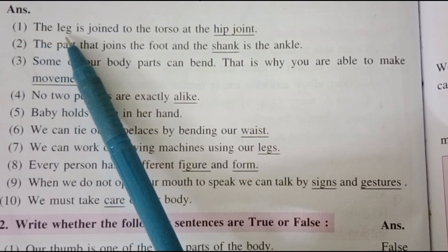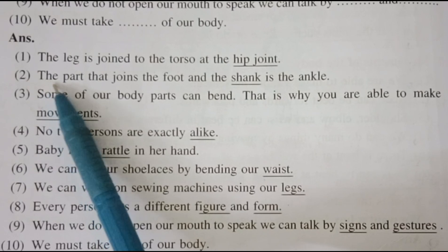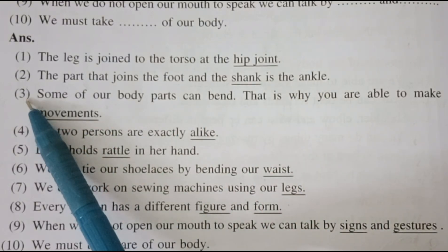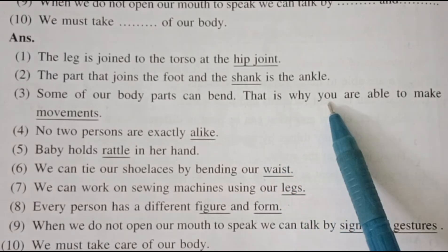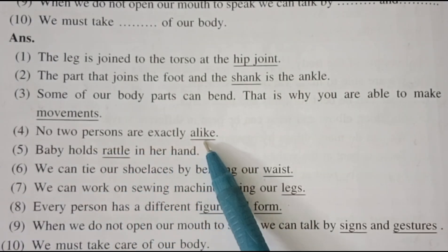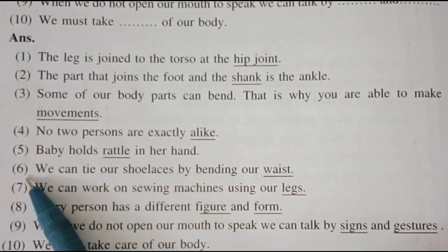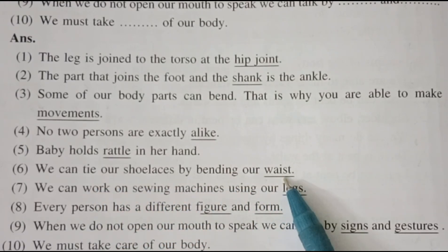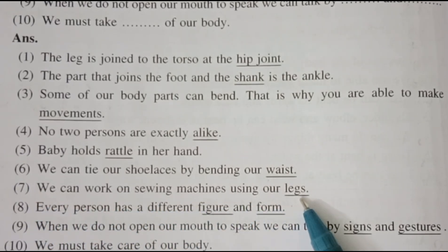1. The leg is joined to the torso at the hip joint. 2. The part that joins the foot and the shank is the ankle. 3. Some of our body parts can bend; that is why you are able to make movements. 4. No two persons are exactly alike. 5. Baby holds rattle in her hand. 6. We can tie our shoelaces by bending our waist. 7. We can work on sewing machines using our legs.